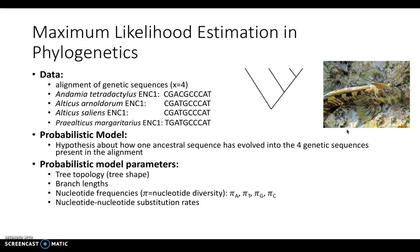We have our four aligned genetic sequences. Now we need a probabilistic model — in this situation, our model will be a hypothesis about how one ancestral sequence evolved into the four genetic sequences in our current alignment. The goal of MLE on this alignment is to find the highest likelihood of the ancestral ENC1 gene sequence for our four selected species. Our model also needs a set of parameters: the tree topology, the branch lengths representing the amount of evolutionary change over time, the nucleotide frequencies represented by pi for each nucleotide, and the nucleotide substitution rates — the probability of a nucleotide being substituted by a different or the same nucleotide.